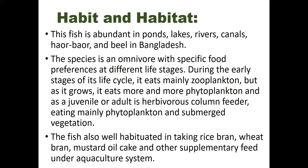The Rui fish has modified thin hair-like gill rakers and feeds by sieving the water. It is also well-habituated to taking rice bran, wheat bran, mustard oil cake, and other supplementary feeds under aquaculture systems, which are provided in hatcheries.